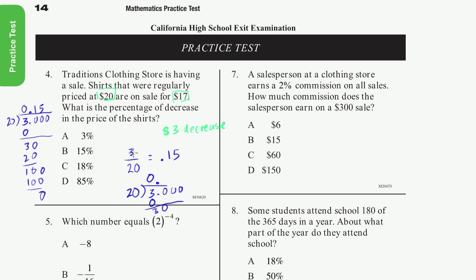Another way you could think about this is 3 twentieths is the same thing if you multiply the numerator and denominator by 5 — it's the same thing as 15 over 100. So that's a way you could have done that in your head. And 0.15 expressed as a percentage is 15%. So the correct answer is B.